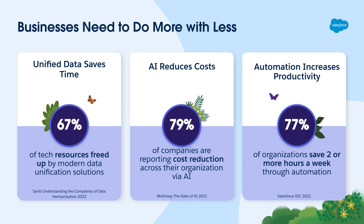And finally, many companies are looking for ways to increase productivity. Currently, 77% of companies are saving more than two hours a week across each line of business by automating repetitive tasks. And if you're watching this video in 2023, you know there are a lot of pressures on the market such as inflation that are affecting the way companies are doing business today.